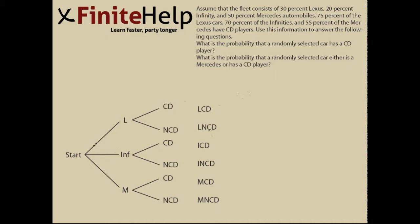First off, we need to put our probabilities in for the first stage of the experiment. It tells us up here that 30% of the fleet is Lexus, so we'll put 30% for the probability of having a Lexus. Infinity is 20% and Mercedes is 50%.